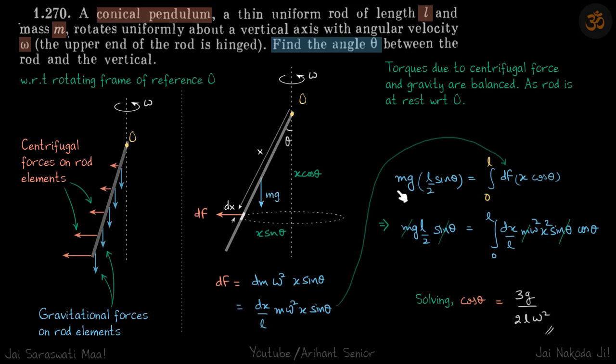Torque due to mg is simply mgl/2 times sine theta. Net torque due to this force df will be df times x cos theta, so df times this height that is x cos theta.